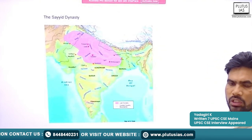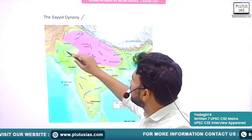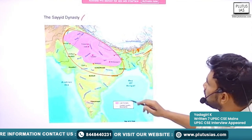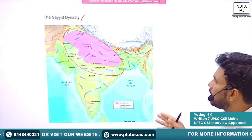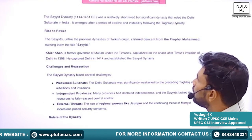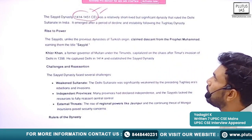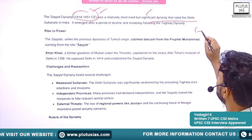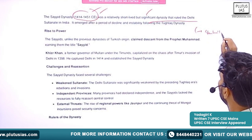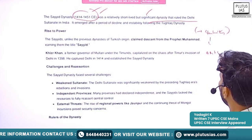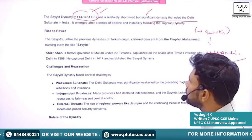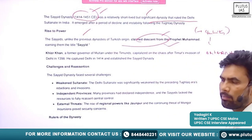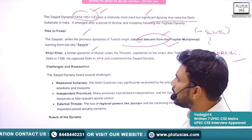Next, another small dynasty ruled the Delhi Sultanate for a brief time — the Sayyid Dynasty, the fourth dynasty in the series. You will see the territory of Delhi Sultanate had declined considerably by that time. The Sayyid rulers ruled between 1414 to 1451. It is a relatively short-lived but significant dynasty. They were able to provide some sort of stability and we also see some progress in art and architecture. Unlike other dynasties, they claimed descent from the Prophet Muhammad himself, and that's why they earned the title Sayyid.